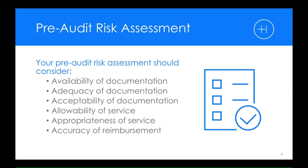This information is necessary to determine what type of risk assessment you'll consider, including the availability of documentation and whether that documentation is adequate for audit needs. Do you believe it would be acceptable for the audit? Are the services you're providing allowable? While they all might have a CPT code or a diagnosis code, are they allowable? Are the services appropriate for the location in which they've been provided, appropriate for the patient's disease, illness, or injury? And is the reimbursement accurate as well?